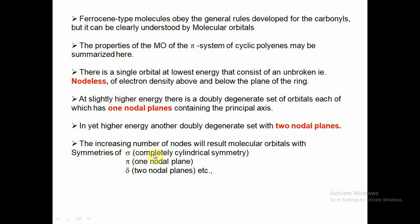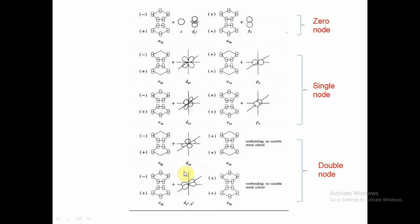Sigma bonding has completely cylindrical symmetry, pi bonding has one nodal plane, and delta bonding has two nodal planes. For the cyclopentadienyl orbitals of ferrocene at zero nodes (lowest energy), the orbitals are a1g and a2u. The possible matching metal orbitals are s and dz² for a1g, and pz for a2u.